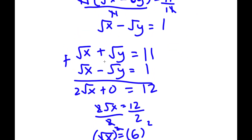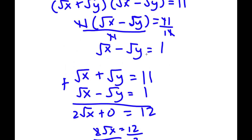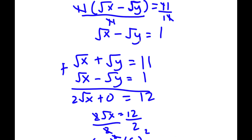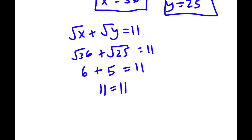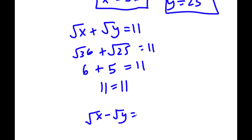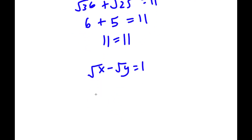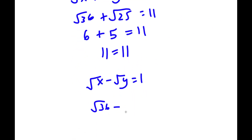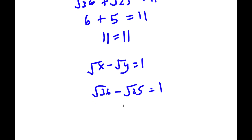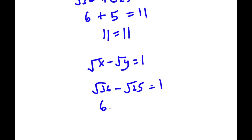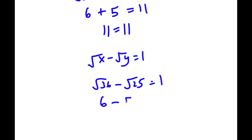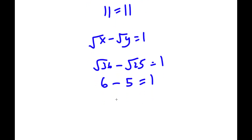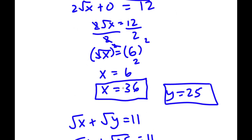We can also plug this into the equation the square root of x minus the square root of y equals 1. x is 36, so the square root of 36 minus the square root of 25 — the square root of 36 is 6 minus the square root of 25 is 5. So we have 6 minus 5 equals 1, and 6 minus 5 is indeed 1. So our solutions are x equals 36 and y equals 25.